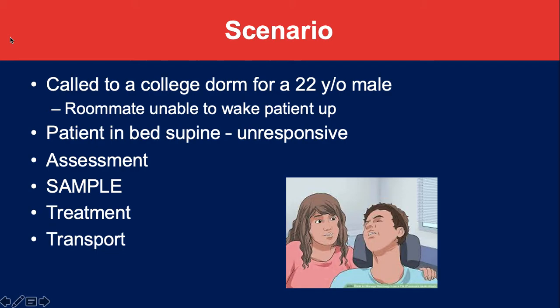The night before, he got drunk and was staggering home from a party. He tripped and fell, hit the back of his head, got up, went back to his dorm, and went to bed. During the night, the swelling and bleeding from this brain injury caused him to have an altered mental status. Treatment would be spinal motion restriction, monitor ABCs, and rapid transport to a trauma center.